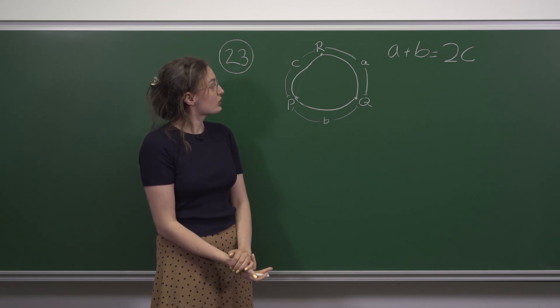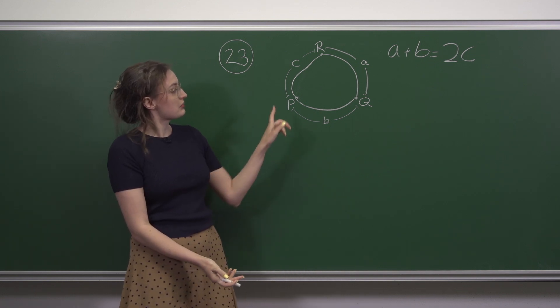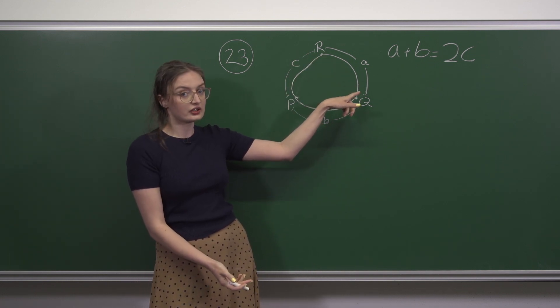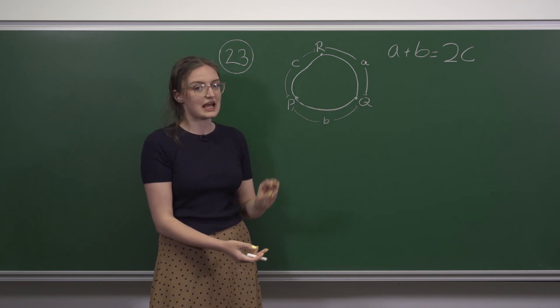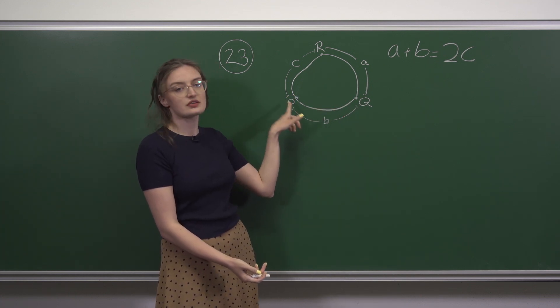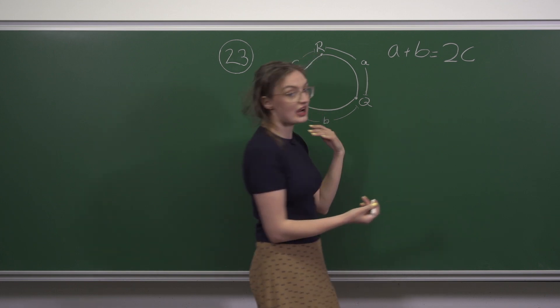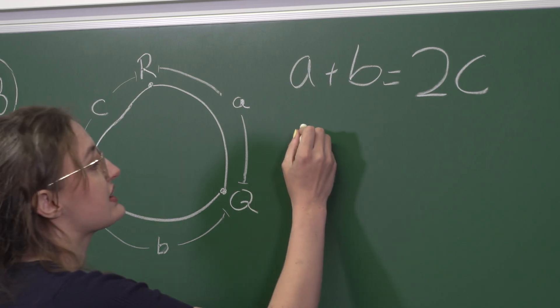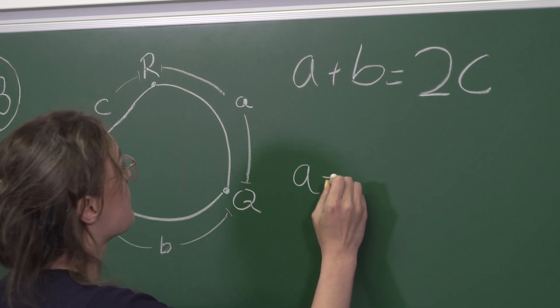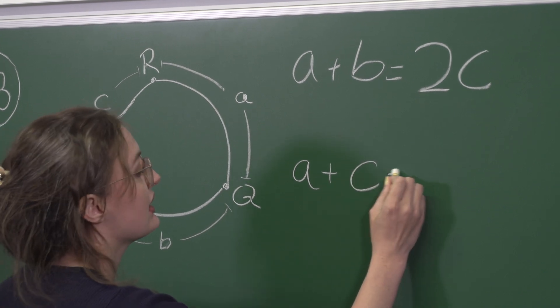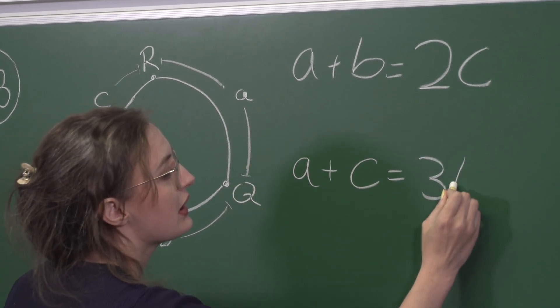We're also told that if we go from P to Q via R that's three times as far as going straight from P to Q. So writing this as an equation we have that A plus C equals 3B.